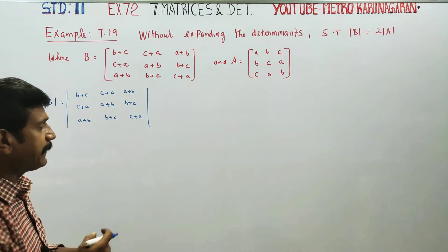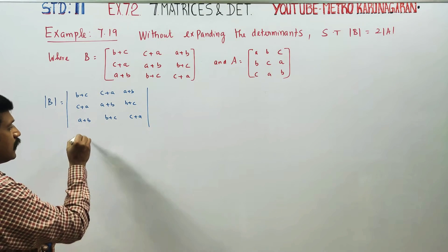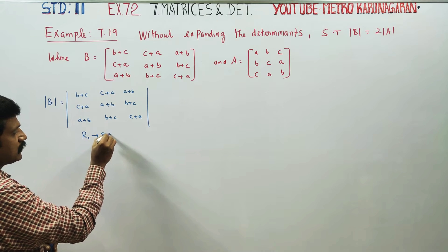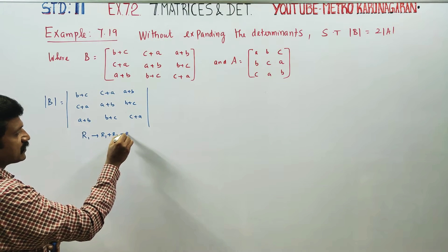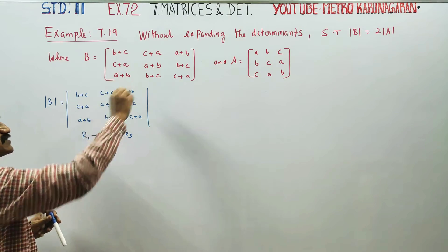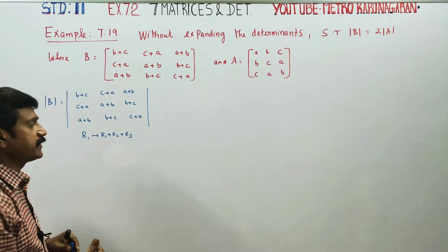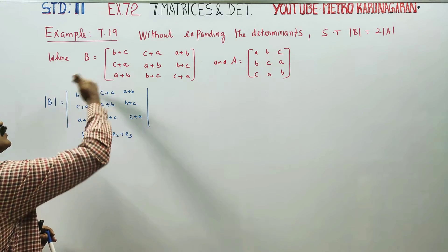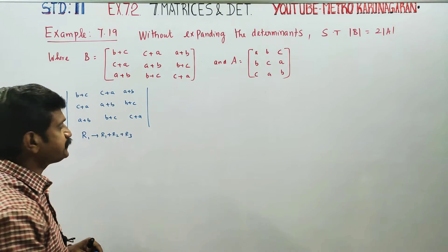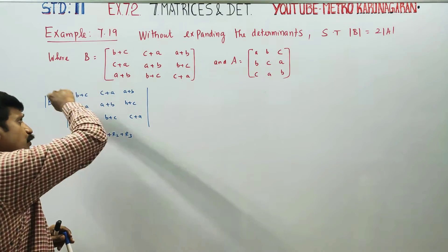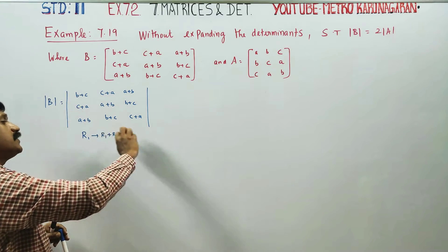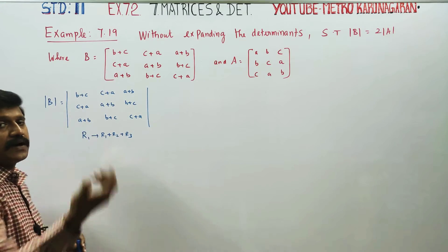If you use the properties, apply R1 = R1 + R2 + R3 in the determinant. In the determinant, add R1, R2, and R3 together. In the determinant, you can add a row to another row — that is the value of the determinant, that is the property.